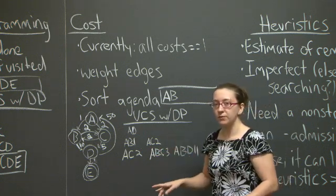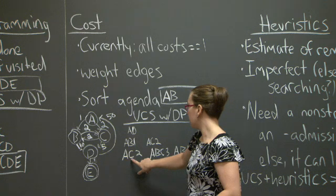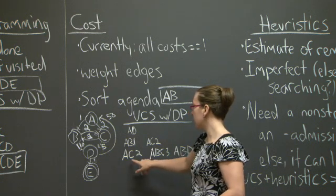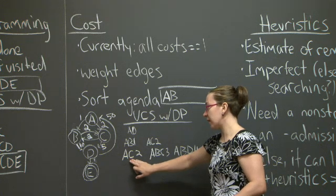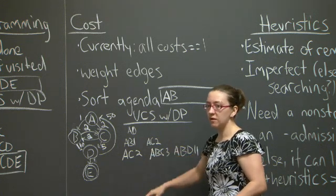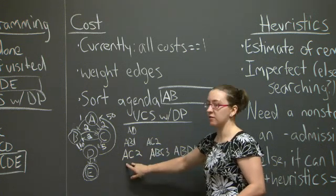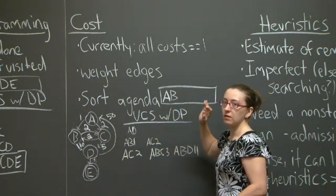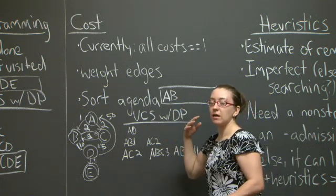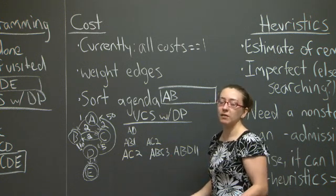Previously, with our strategy for dynamic programming, C would not have been added to this partial path because we've already visited it with path AC. At this step, we're going to expand the path AC, add C to the list, and any other time that we end up visiting C, we will not add it to our paths.